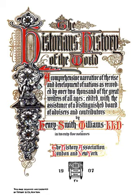The Historian's History of the World, subtitled A Comprehensive Narrative of the Rise and Development of Nations as recorded by over 2,000 of the great writers of all ages, is a 25-volume encyclopedia of world history originally published in English near the beginning of the 20th century. It was compiled by Henry Smith Williams, a medical doctor and author of many books on medicine, science, and history, as well as other authorities on history, and published in New York in 1902 by Encyclopædia Britannica and the Outlook Company.